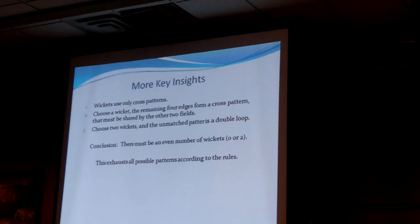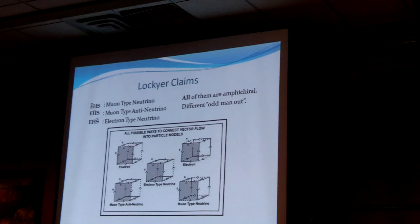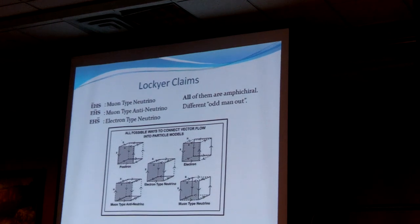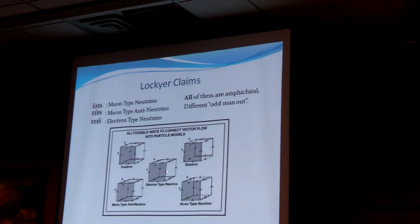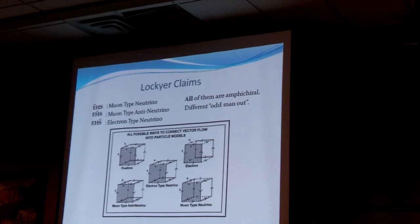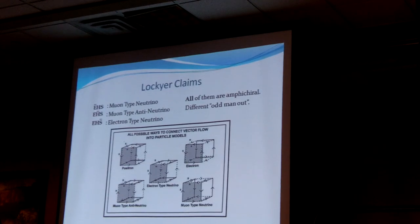If you choose one wicket, what's left over is also a cross pattern, which means there has to be another wicket. It turns out you have to have two wickets — they only use cross patterns. If you choose two wickets, the unmatched one is paired with a double loop. So the conclusion is: there must be an even number of wickets. The only possible patterns are either all double loops, or one double loop and two wickets.